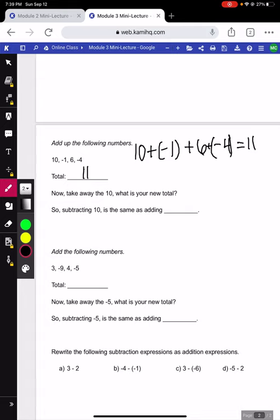If we were to take away the 10 from that original thing and add up the numbers given, negative 1 plus 6 plus negative 4 would give us positive 1. So as we can see, we took away a 10 was the same thing as adding a negative 10.